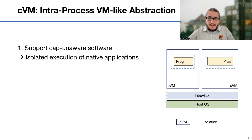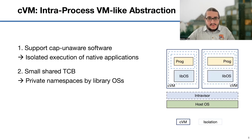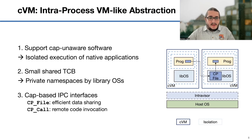We built such a cloud stack. The key elements are the Intervisor and CapVMs — CVM in short. The latter is an intra-process VM-like abstraction that includes a kernel in the form of a library operating system and programs. CapVMs share a single address space of the Intervisor and use CHERI capabilities for isolation and sharing. CapVMs support capability-unaware applications, so existing applications can freely run in an isolated way. CapVMs support existing OS functionality while keeping the CHERI trusted computing base small. Each application has its own independent, dedicated kernel in the form of a library operating system. CapVMs also provide efficient IPC interfaces, allowing applications to share data or perform remote code invocation — you can put a component of your application into a separate CapVM and invoke its methods.